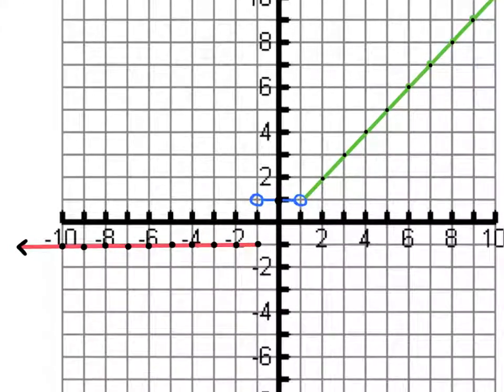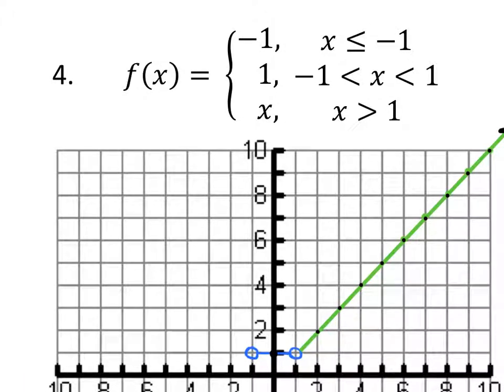Now the last piece of the function is where the function equals x. The function is equal to x when x is bigger than 1. Notice, again, this is not equal to 1 here, but as it goes past 1 or immediately following 1, it's going to start following the pattern of the function y equals x.